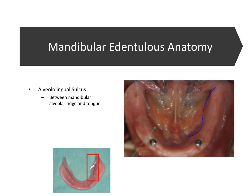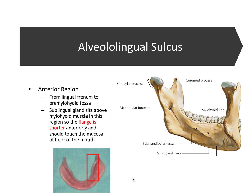You can see that the flange of the denture — the extension into the vestibule area — follows this same S: in, out, and in. Those nicely correspond to each other from the patient's anatomy to the denture. The alveololingual sulcus has three regions: the anterior region, the middle region, and the posterior region.